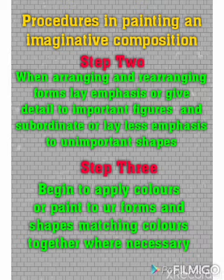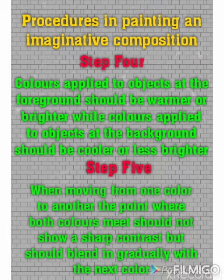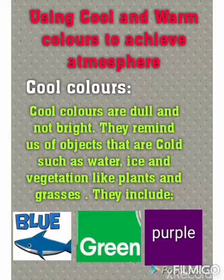Step four: warm colors are used to paint the foreground of a painting, while cool colors are used to paint the background. The foreground is the area below in your picture, and the background is the area above. Step five: when moving from one color to another, the point where these colors meet should be blended gradually so that the change from one color to the other would not be noticed.